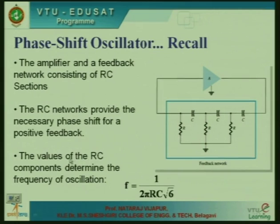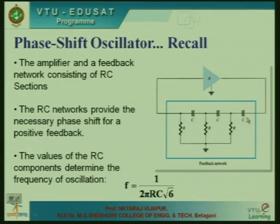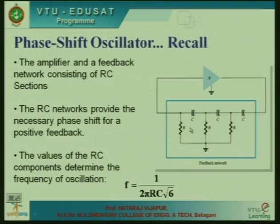Recalling the general phase shift oscillator — a general RC phase shift oscillator consists of an amplifier and a feedback network of 3 RC sections. If the amplifier introduces 180 degrees, each RC section introduces 60 degrees, and together the feedback network generates 180 degrees phase shift. So 180 plus 180 equals 360 degrees total.